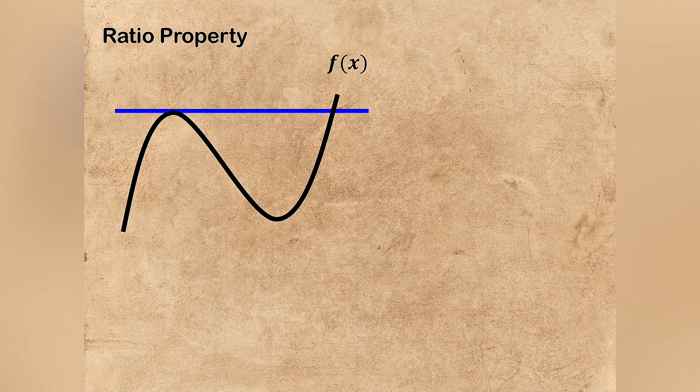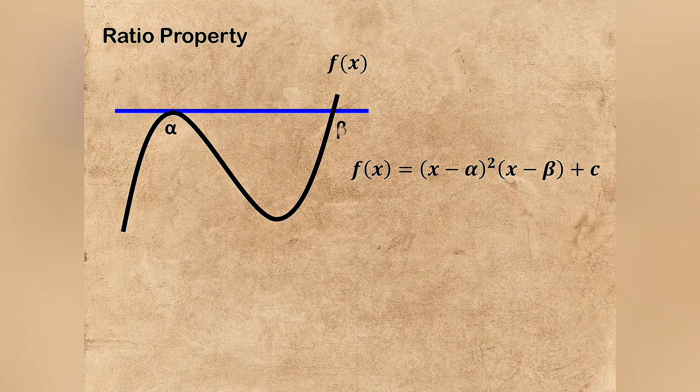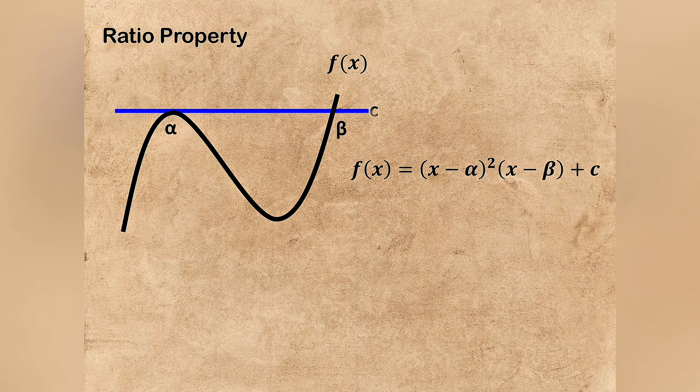Say we have this graph of a cubic function and the horizontal line passing through the local max. Let's say we have this function f(x) as (x-α)²(x-β)+c. Then we can say this x coordinate is α, and this x coordinate as β, and this horizontal straight line as c. Let's say these two points as capital letter A and C.